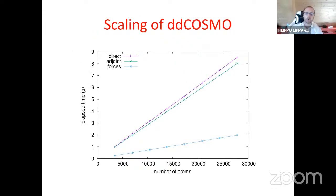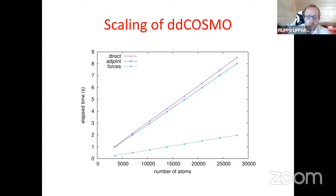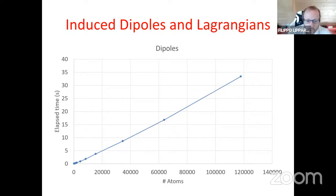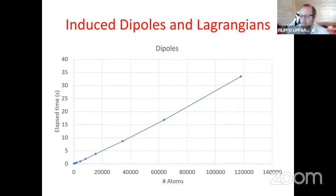In practice, solving the direct and adjoint DD-COSMO equations and computing forces scales linearly with the number of embedded atoms. Similarly, computing AMOEBA induced dipoles with FMM yields linear scaling. All these calculations run on a single server with 12 cores from 2013 — not a powerful machine — and one can handle quite large systems for QM/MM purposes without major complications.